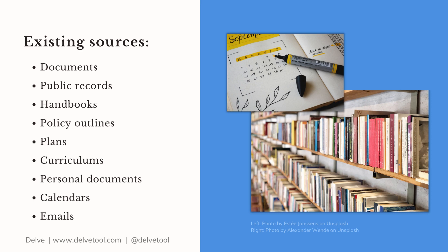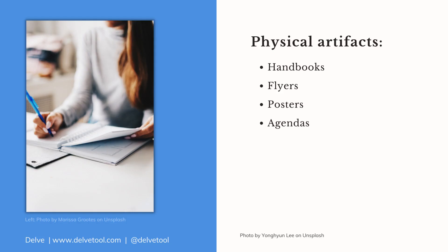Qualitative data can also be collected from existing sources. There are a number of sources like documents — such as public records, handbooks, policy outlines, plans, curriculums, personal documents like calendars, emails, or physical artifacts like handbooks, flyers, posters, or agendas.